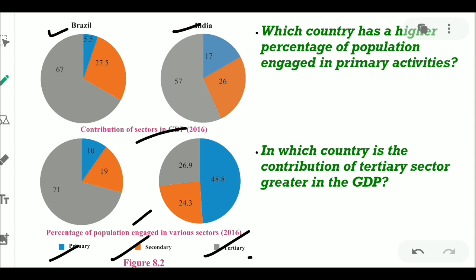Question: which country has a higher percentage of population engaged in primary activities? We can see the percentage of population in the second pie chart, and it is clearly found that India has more percentage of population engaged in primary activities.